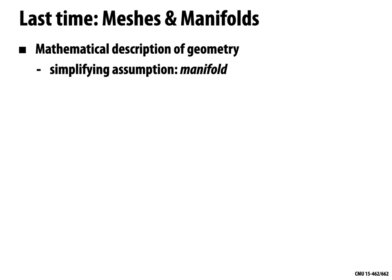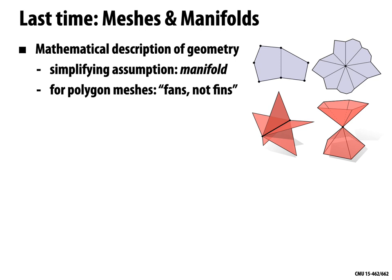In some sense each little tiny piece of our shape can be stretched out into the Euclidean plane. For meshes this became more explicit: the connectivity of a polygon mesh is manifold if it has fans but not fins — a single loop of polygons around every vertex and just two polygons containing each interior edge. This simplifying assumption makes it easier to develop algorithms with a regular, predictable structure.